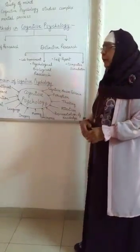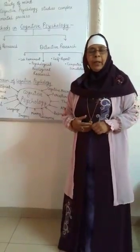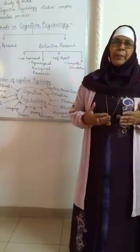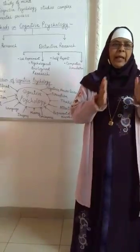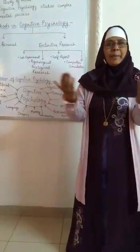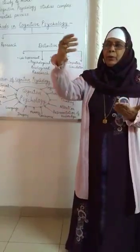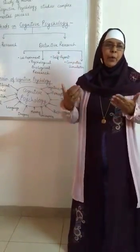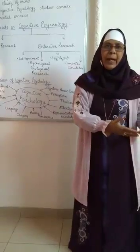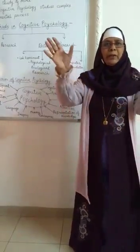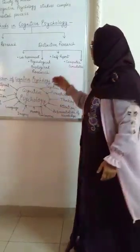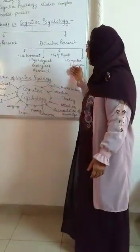The last method is computer simulation. Artificial intelligence is also very important — it thinks in a way very similar to how humans think. Human thinking is processed and encoded into the computer, and the computer also thinks along the lines of the human. Such types of studies are known as computer simulation.